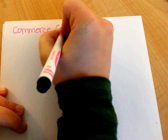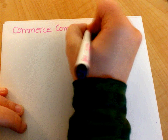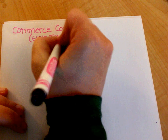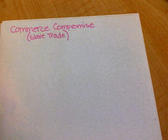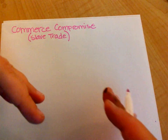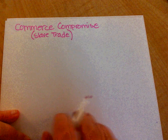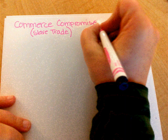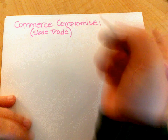Next we have the Commerce Compromise, also known as the Slave Trade Compromise. They're discussing the involvement of the slave trade — are we going to keep up with the slave trade? It's already been banished in the North, but the South still has slaves. What they're going to decide is that Congress cannot interfere with slavery until 1808.